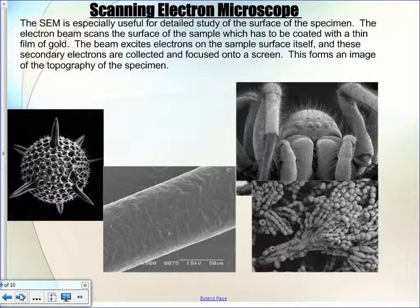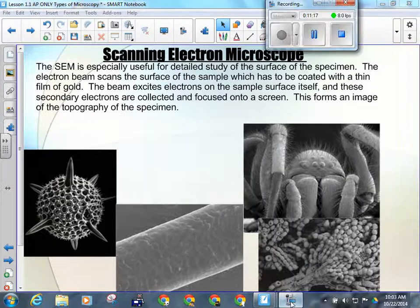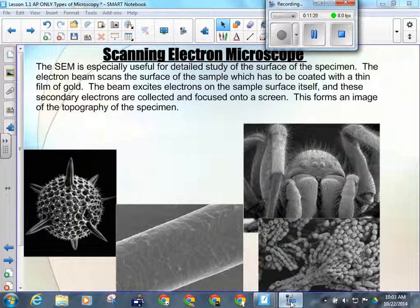So the three kinds of microscopy are: light, transmission electron, and scanning electron. Here's an actinopod — it's an aquatic protist, kind of like an amoeba with a shell. You will have a quiz tomorrow.